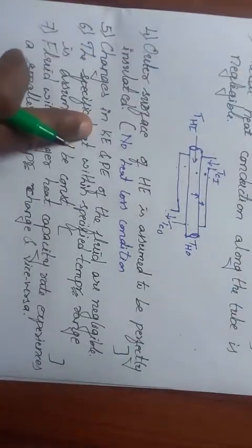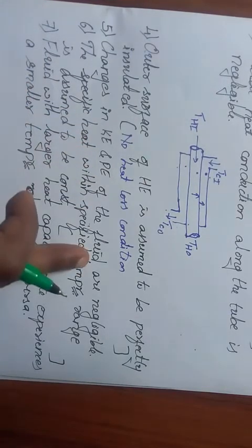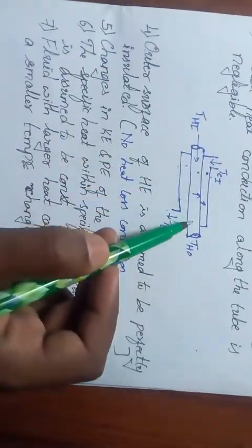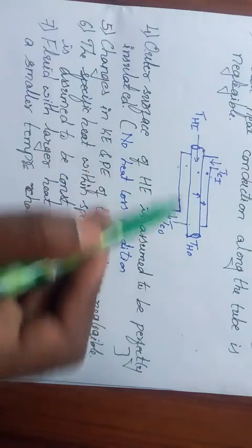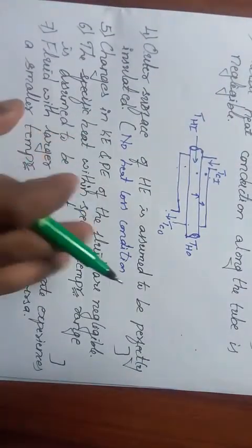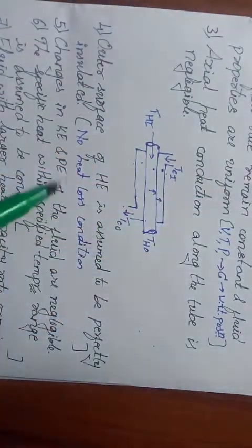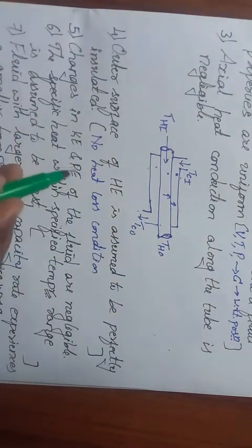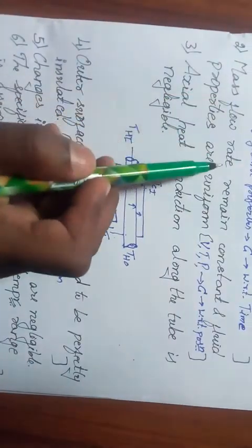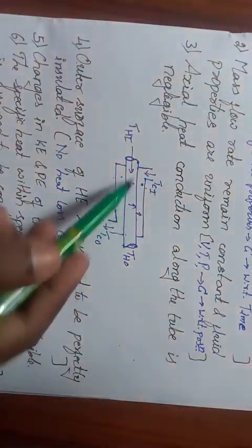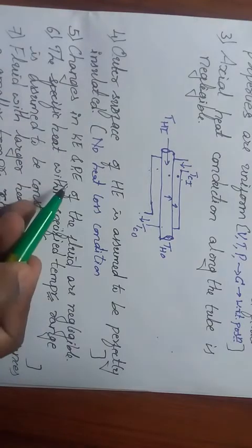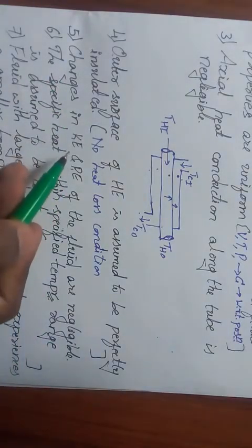Coming to the fifth one: changes in kinetic energy and potential energy of the fluids are negligible. The fluid having a flow velocity may change, which results in changing kinetic energy, but since we have told that it is uniform, there will be no change in velocity and hence no change in kinetic energy. Similarly, potential energy also remains the same since mass flow rate is the same and there is nothing like height difference. We will see the product of m into g into h, which is nothing but potential energy, also remains the same. So the changes are negligible - that means the values are not changing.